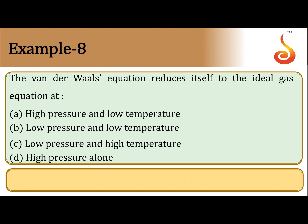The Van der Waals equation reduces itself to the ideal gas equation. The Van der Waals equation is: P plus A by V square, into V minus B, is equal to RT. This is for one mole.